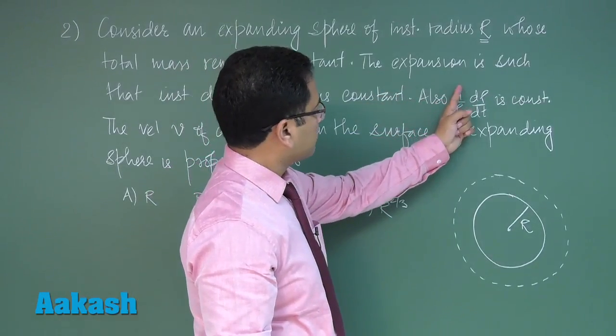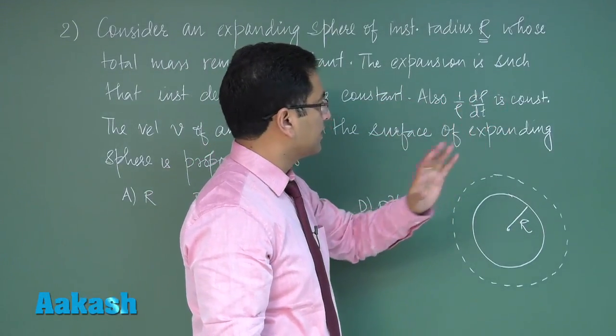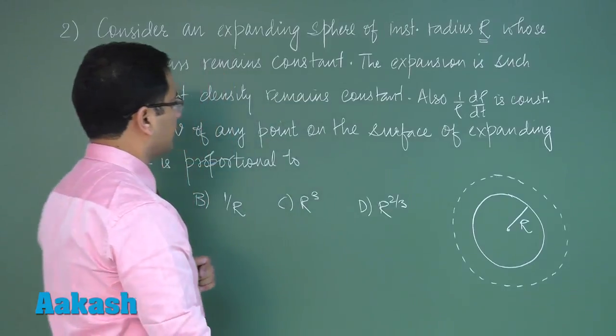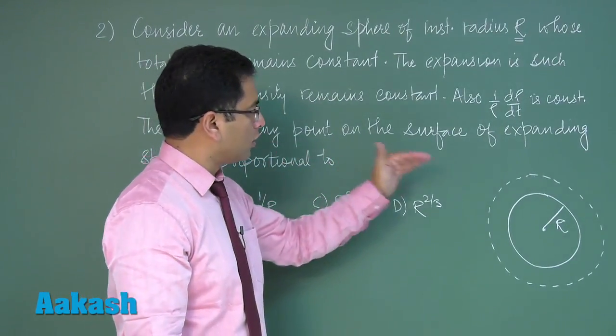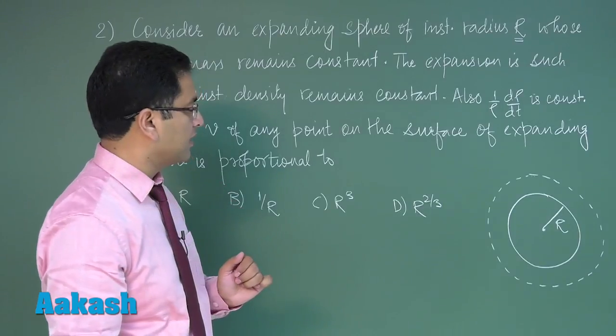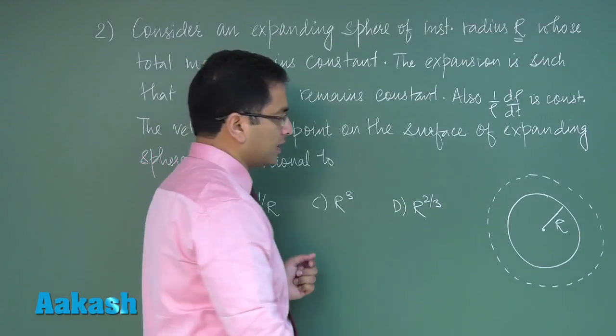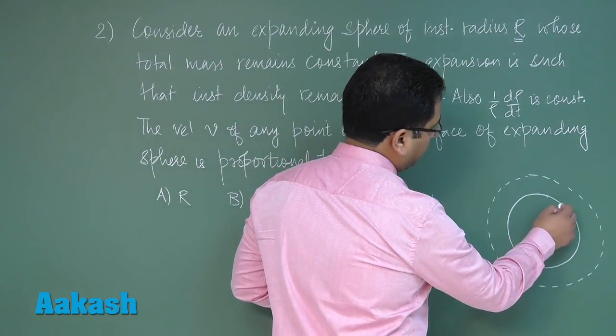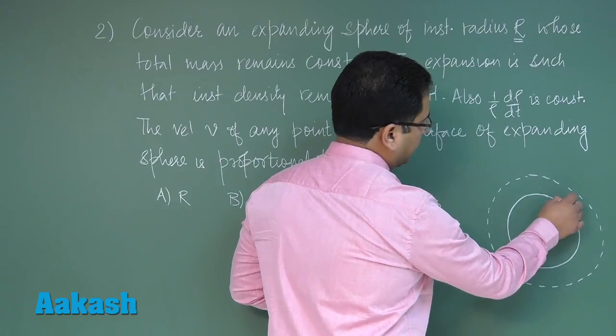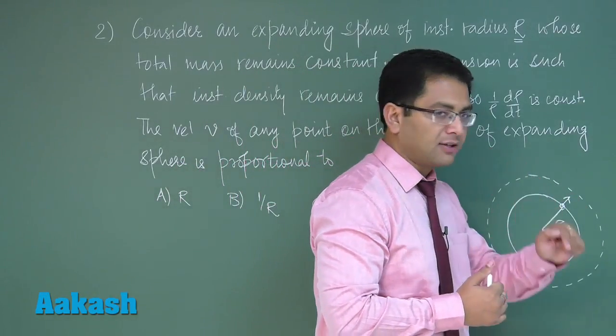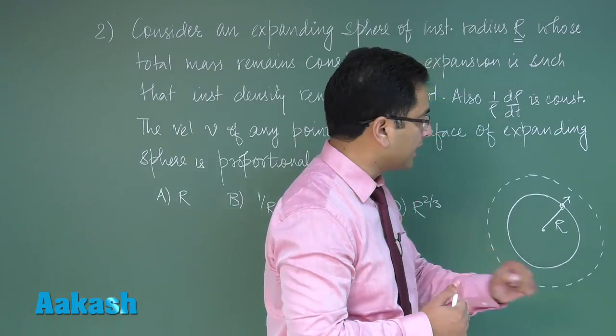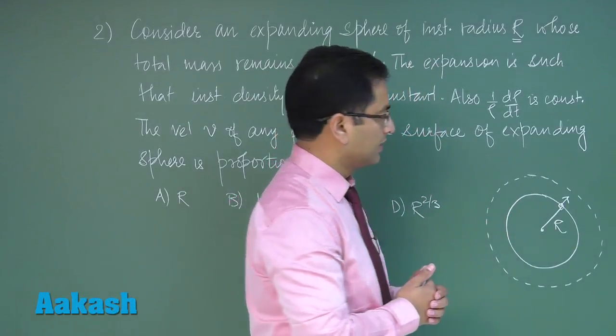And also 1/ρ × dρ/dt is constant. This additional fact is also given. The velocity v of any point on the surface of the expanding sphere is proportional to... Since it is expanding in the radial direction, this point's velocity would be represented by dR/dt.